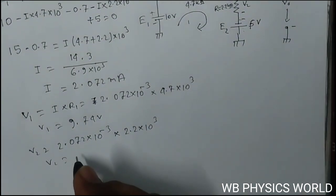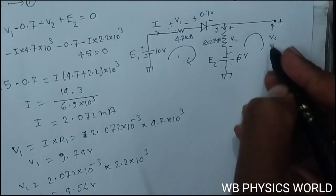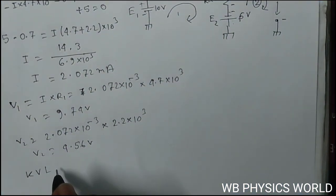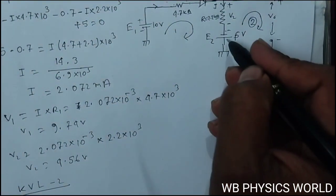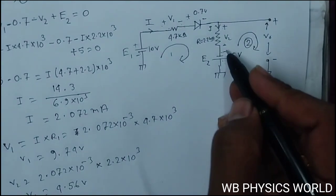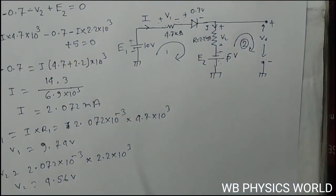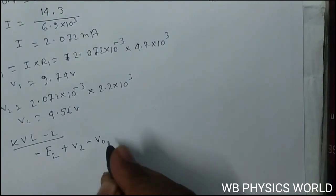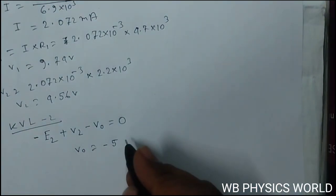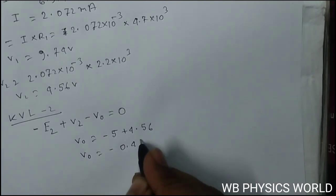For V2, I is 2.072 into 10 to the power minus 3 and resistance is 2.2 into 10 to the power 3, so V2 is 4.56 volt. Now to calculate V0, we apply KVL in loop 2. From the loop, minus V0 equals 0, so V0 equals E2 minus V2, which is minus 5 plus 4.56, giving V0 equal to minus 0.44 volt.